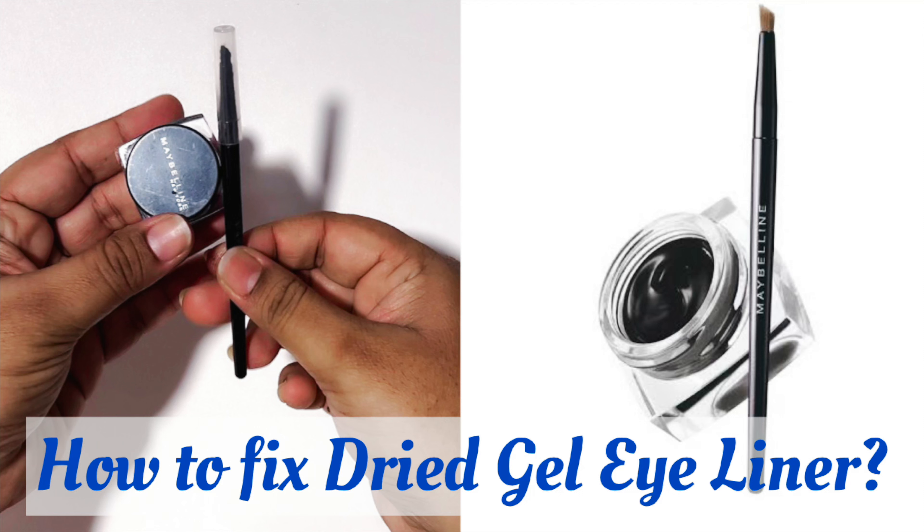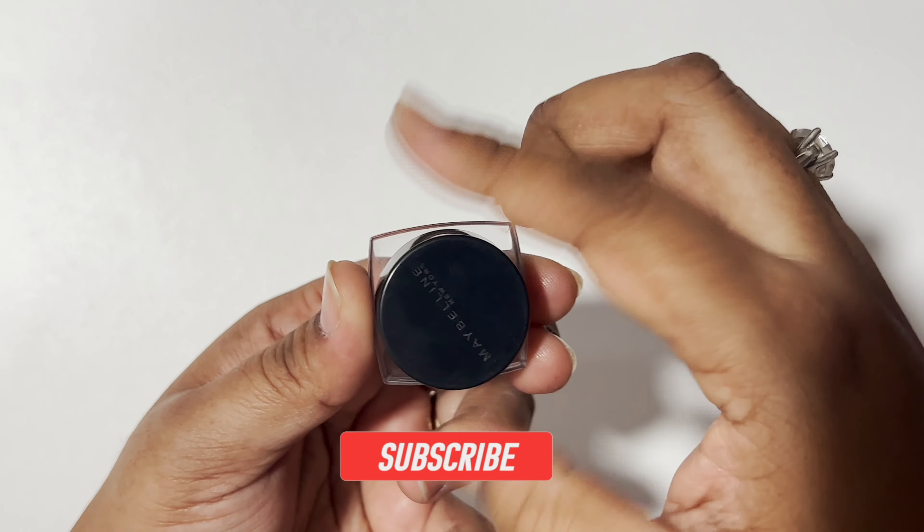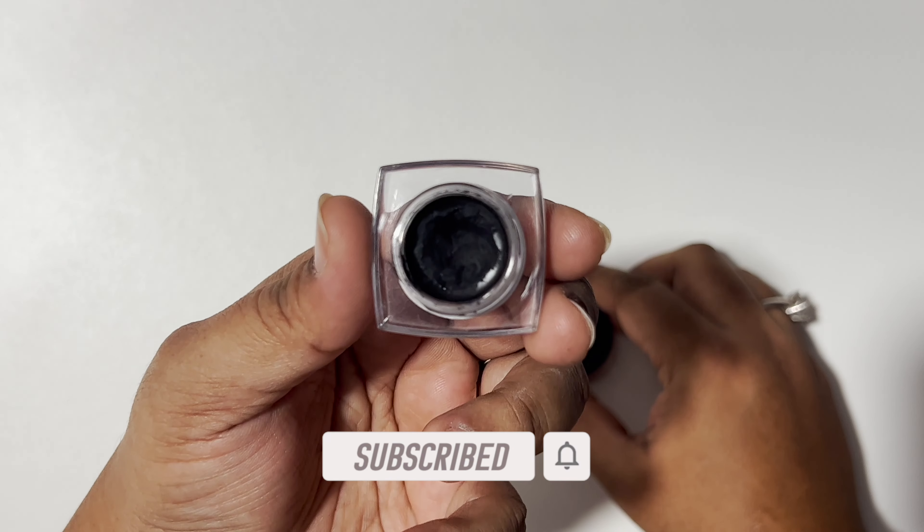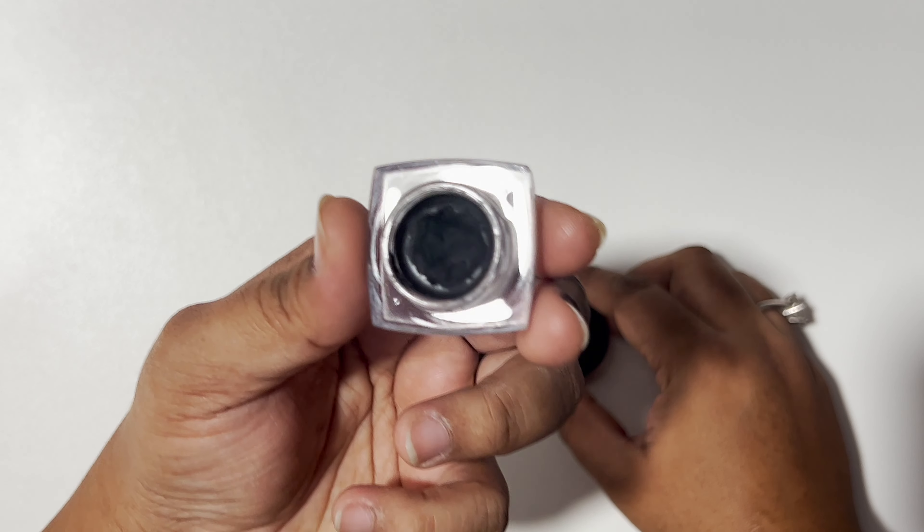Hey guys, welcome back to our channel. In today's video, I'm going to talk to you about how to fix your dried gel eyeliner. This is my Maybelline gel eyeliner, and I've been using it for about one year. Now it's completely dried up and flaky, so I'm going to show you how to make it reusable and creamy once again.